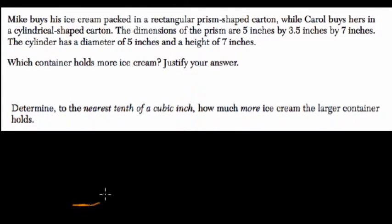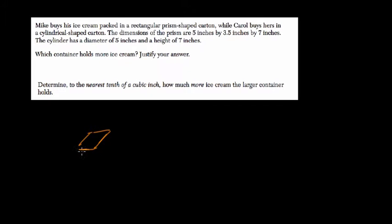Well, let's sketch these out. A rectangular prism, something like this, is holding ice cream, and we're told that it's 5 by 3.5 by 7. So maybe 7 is the height. We'll say 3.5 is the length, and 5 is the width. So the volume would just be these three things multiplied: 5 times 3.5 times 7.